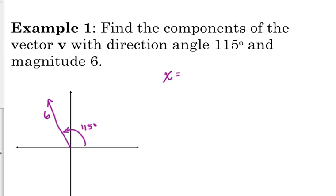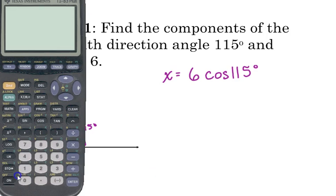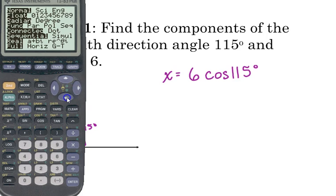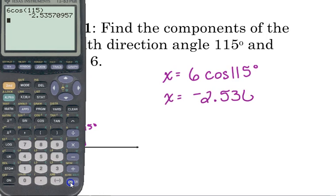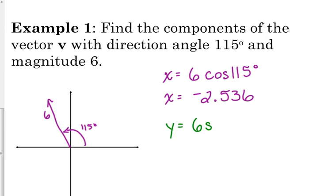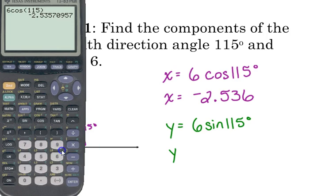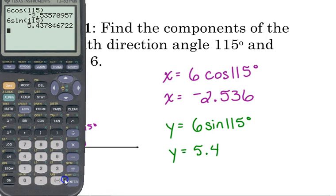So, my x component is found by taking my magnitude times the cosine of 115 degrees. Make sure your calculator is in degree mode because we're doing an application. Applications are usually in degrees. 6 cosine of 115. Our x component is negative 2.536. Our y component would be 6 sine of 115. Which is 5.438.